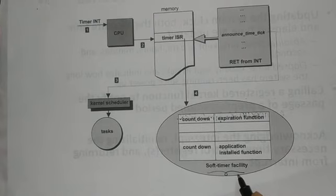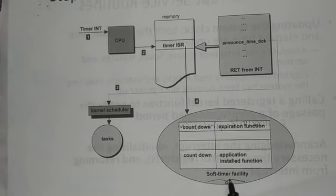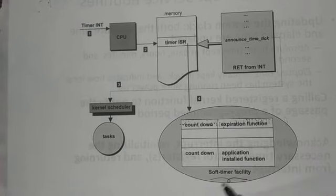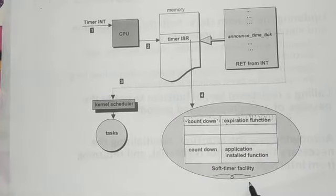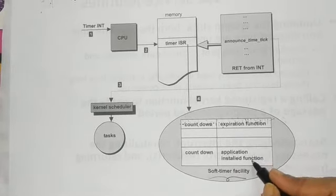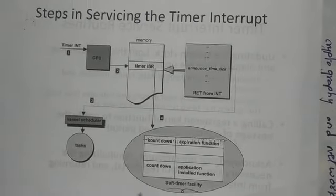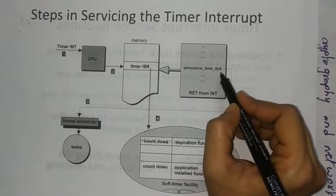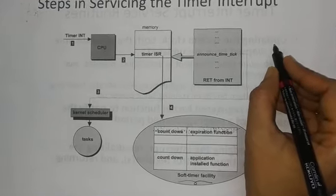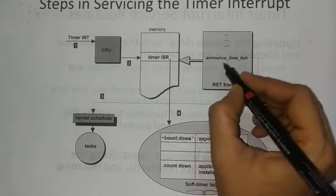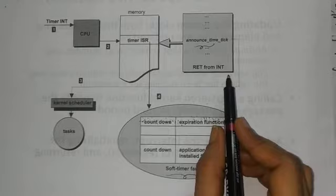Soft timers were discussed in the previous section. The soft timer has three properties, also discussed previously: countdown maintenance, countdown initialization, and countdown removal. Here we are also introducing the soft timer facility for maintaining the expiration function, specification, and application installed function. These values are specified using the countdown functions. The announce time tick function has all the restrictions placed on an ISR applicable to it, as it is part of the ISR and shares the same functionalities and restrictions.